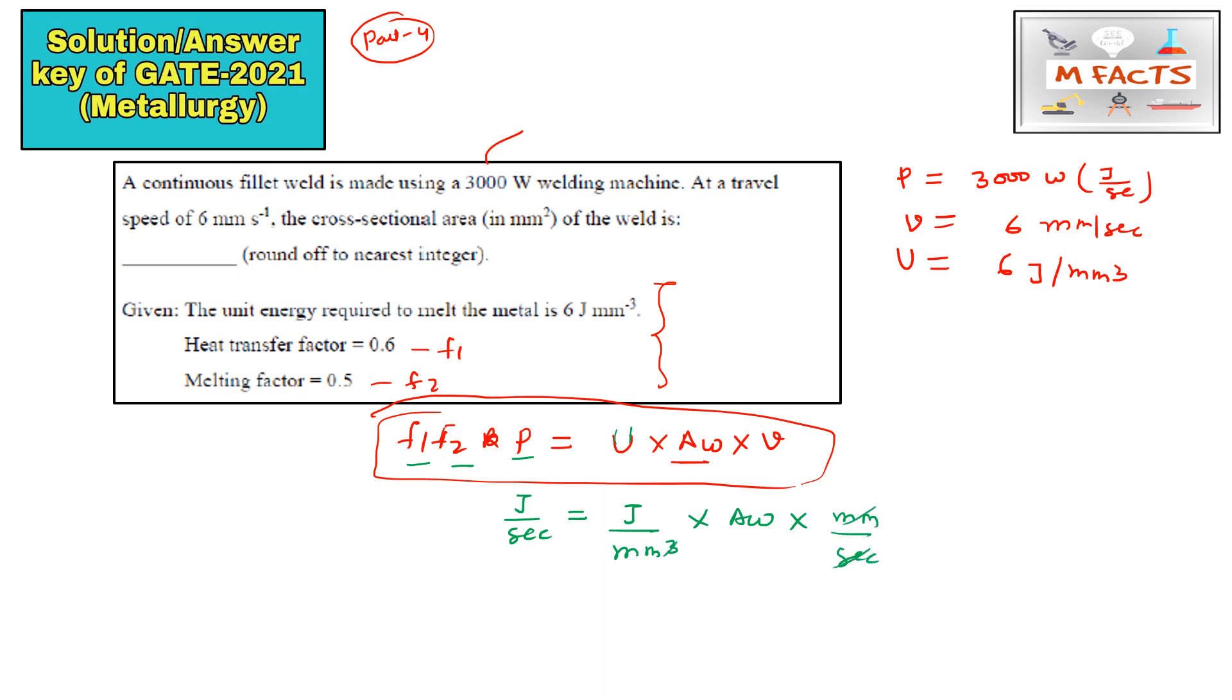Velocity is having unit mm per second. So this mm will get cancelled, the seconds will get cancelled, this joule will get cancelled. From here Aw will become in mm square. So this is basically the unit balance.